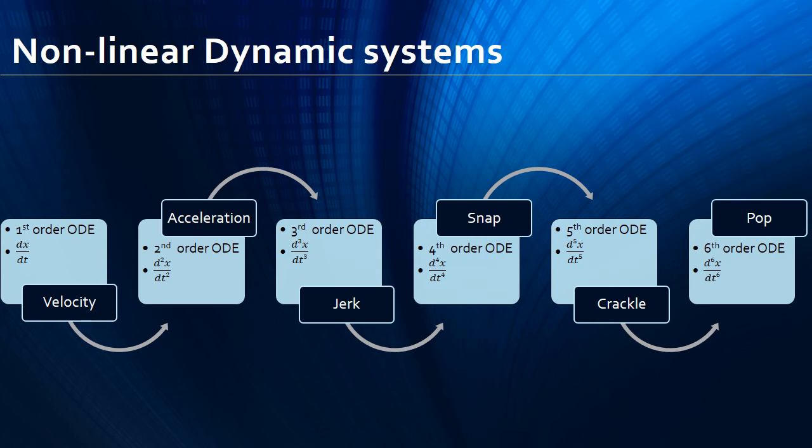So if a dynamic system is mathematically expressed as a fifth-order ODE then it is expressing crackle. And if for a particular control parameter value of the system the dynamics exhibits chaos, then that system is said to be a chaotic system.